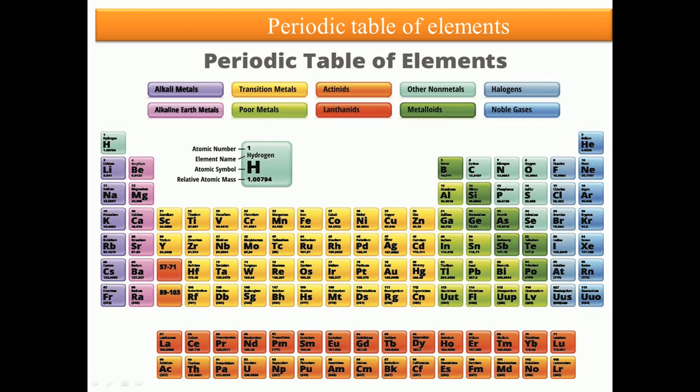These are the transition metals, and these are metalloids like boron. Now come to actinides. Actinides, you can see here, are arranged in a proper order, starting from Ac. And these are lanthanides, starting from La.